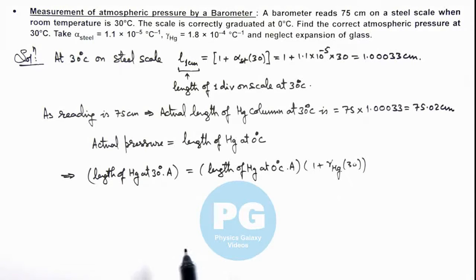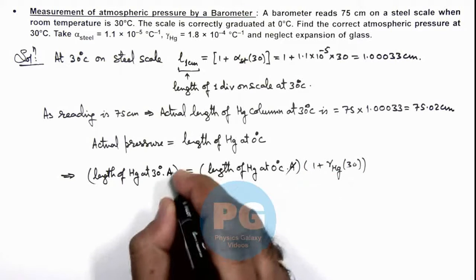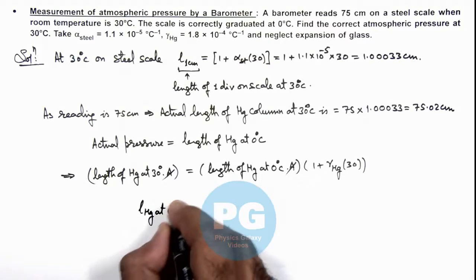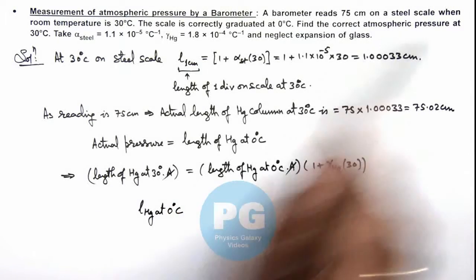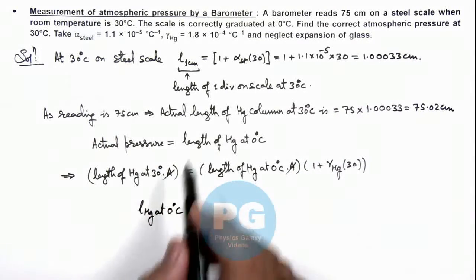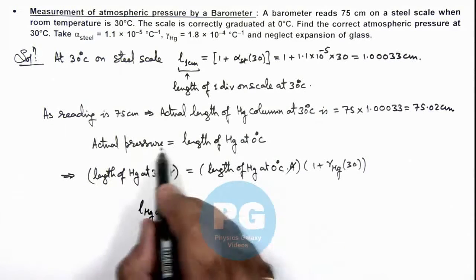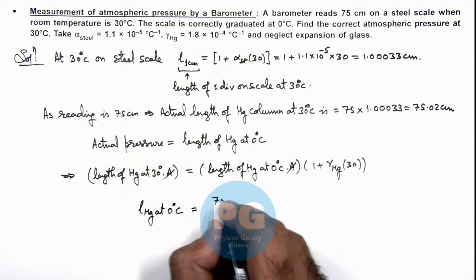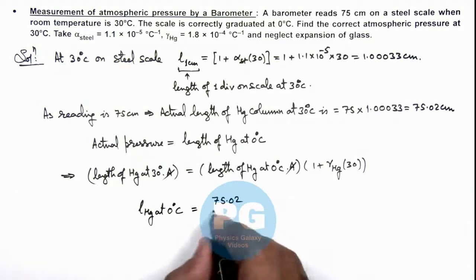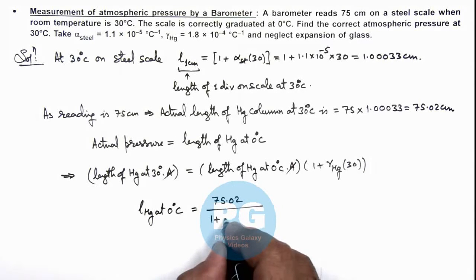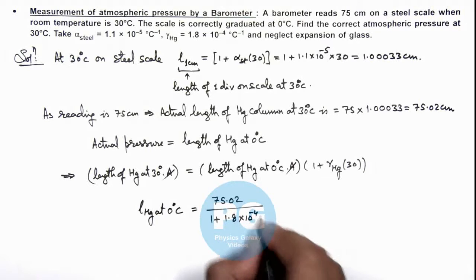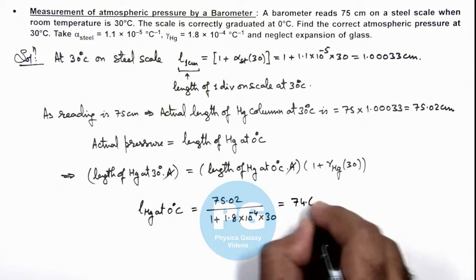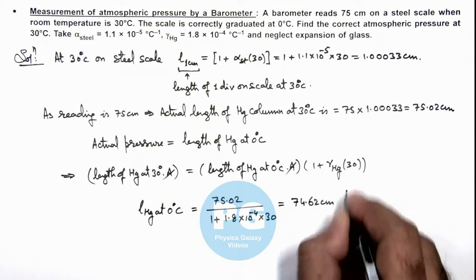Simplifying here, area gets cancelled out, and the length of mercury column at zero degree centigrade — which is the correct atmospheric pressure at 30 degree — is found by transforming the length of mercury at 30 degree to length at zero degree. This equals 75.02 divided by 1 plus gamma of mercury (1.8 into 10 to the power minus 4) multiplied by 30, giving us 74.62 centimeter. That is the result of this problem.